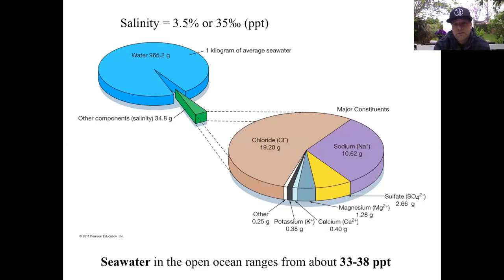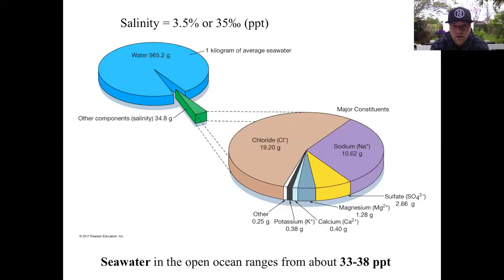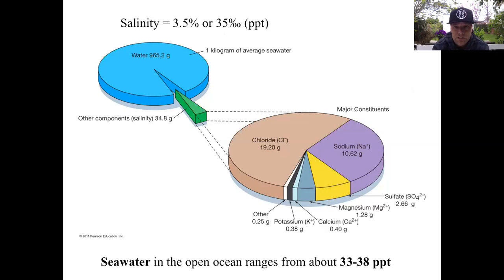Maybe some of you are missing baseball like I am. If you take a look at the top left-hand corner, you can see that the salts in the ocean are about 3.5 percent — that's 3.5 out of 100 percent. The next number is 35 parts per thousand, abbreviated PPT. It's very similar to a baseball batting average: if a hitter is batting 500, that means out of 1,000 at-bats they get 500 hits.